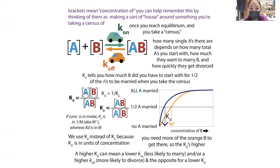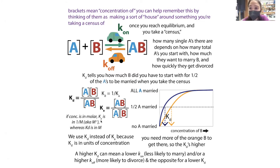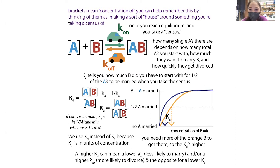Using the dissociation constant gives us units of concentration — molarity, micromolar, nanomolar, picomolar — depending on the affinity. If something has really tight affinity, you're talking about the nanomolar or picomolar range. Weaker affinity pushes you into the micromolar or millimolar range.